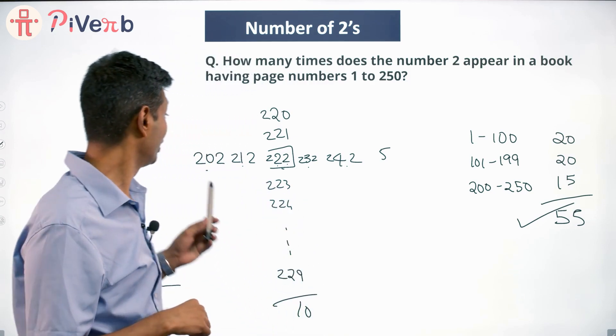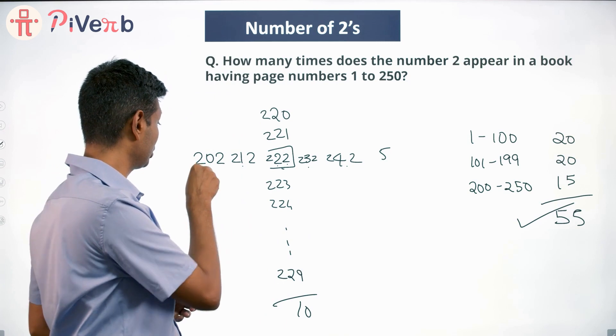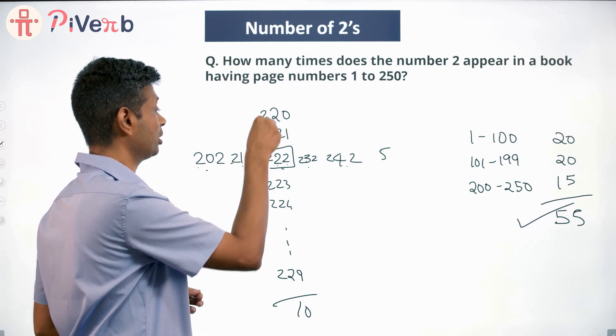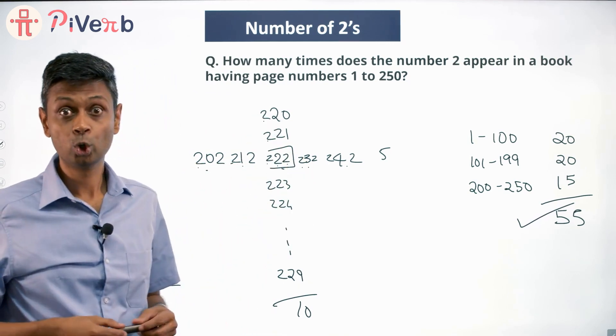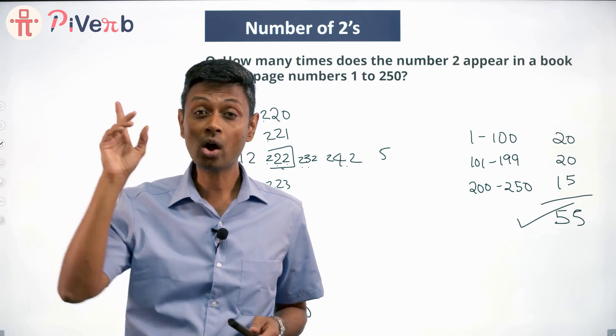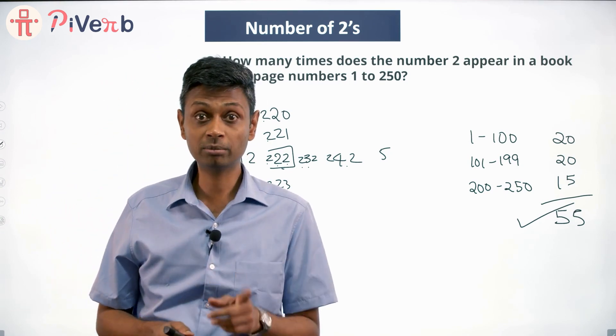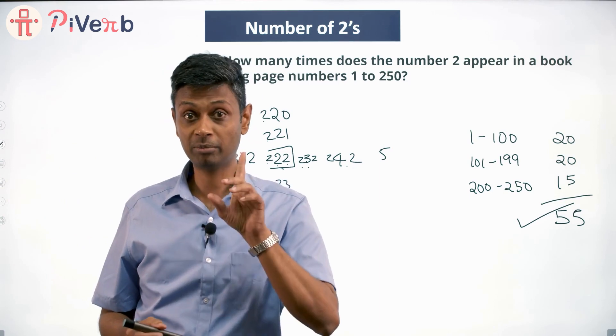I just wrote down 202, 212, 222. These 2s in the hundredth place, I seem to have forgotten them. 200 to 250, all these numbers will have 2 at the hundredth place. That's not 50 numbers, that is 51 numbers. Keep that in mind.